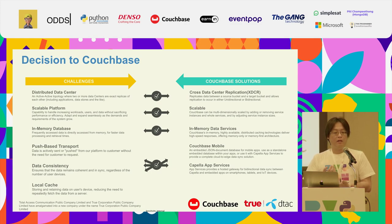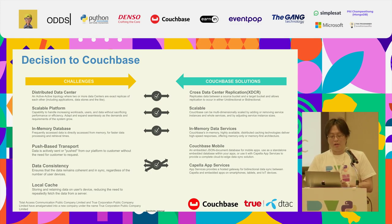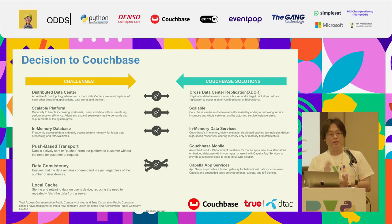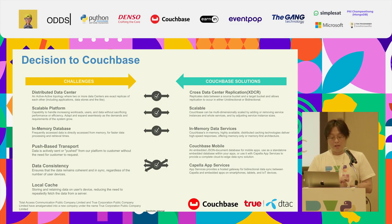It also provides data consistency: on the user device, if you go offline and make changes, when you go back online those changes can sync up with our database. In our current scenario we are using read-only data syncing with user devices. Another service is called Capella App Services, which is a Sync Gateway between Couchbase Mobile and our Couchbase database server. These two services can solve our issues with push-based transport, data consistency, and local cache.